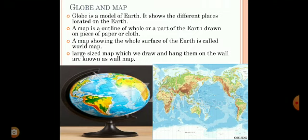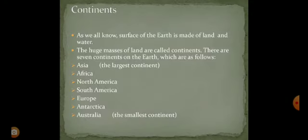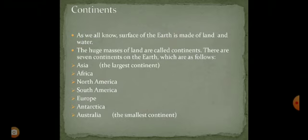A map showing the whole surface of the earth is called a wall map — large-sized maps that we draw and hang on the wall are known as wall maps. Now, continents: the surface of the earth is made of land and water. The huge masses of land are called continents. There are seven continents on the earth: Asia, Africa, North America, South America, Europe, Antarctica, and Australia. Asia is the largest continent, Australia is the smallest continent, and Antarctica is also called the white continent.